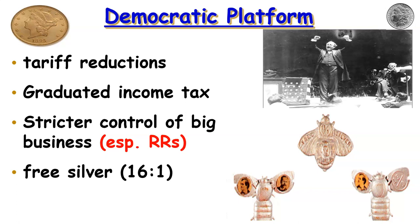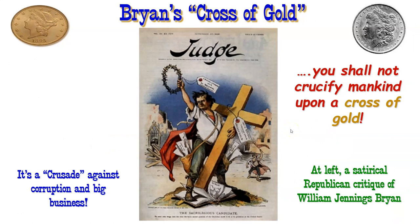It was a good versus evil campaign — agrarian, common person versus big business. The platform included tariff reductions, a graduated income tax, restriction and control of big business especially railroads, and free coinage of silver. If you were a Democrat and Bryan supporter, you were a 'silver bug.' The silver ratio was 16 ounces of silver to every ounce of gold.